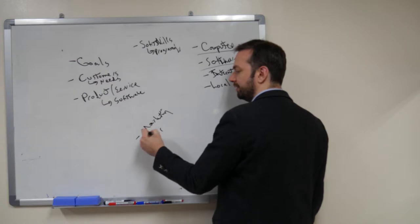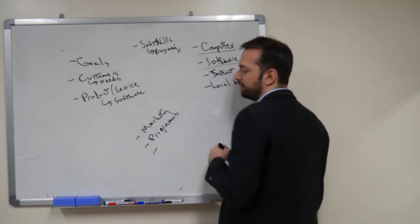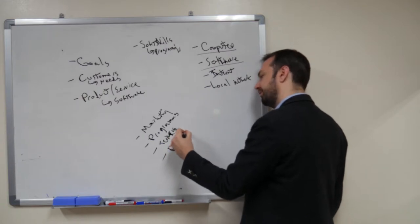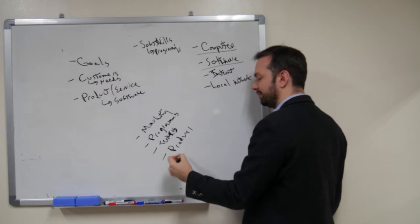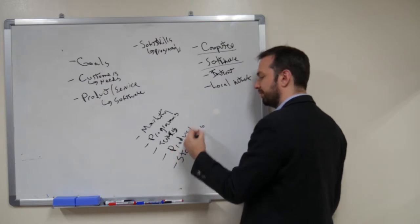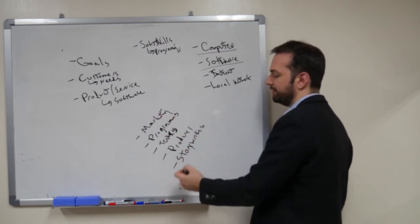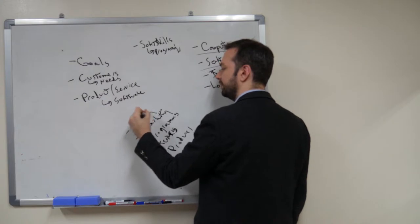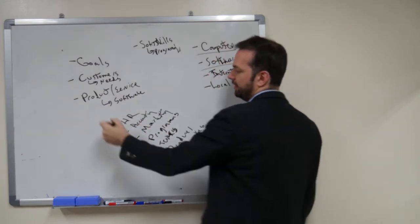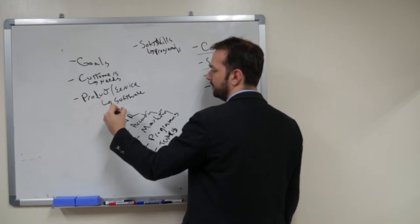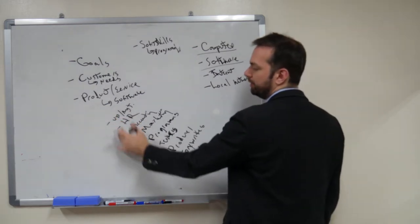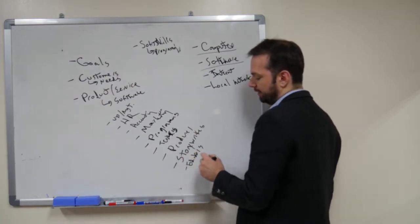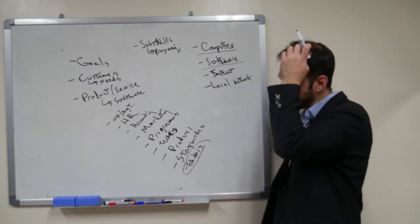So you have programmers, testers, and a producer. You have story writers, and within the marketing team you might have copywriters and editors. Then there's accounting and human resources, and upper management or the CEO. So: upper management, human resources, accounting, marketing, programmers, testers, producers, story writers, and other people associated with this company. Whenever you're actually planning a company, you have a lot of different jobs.